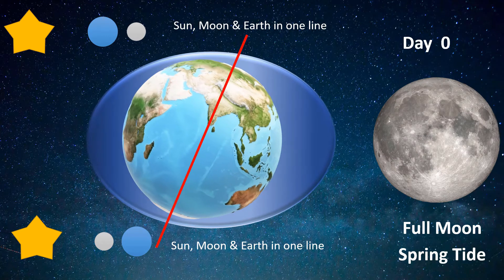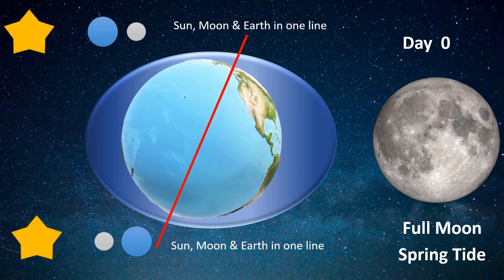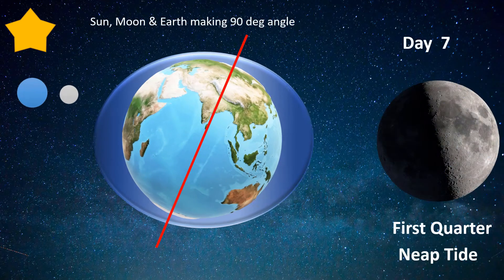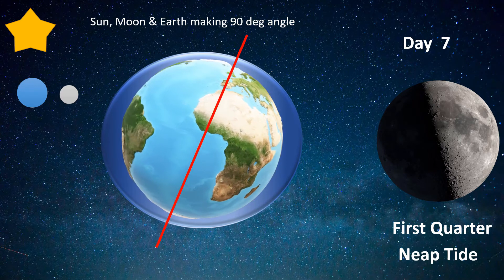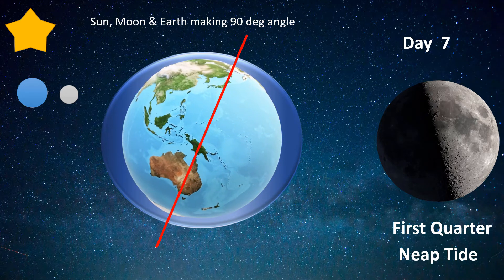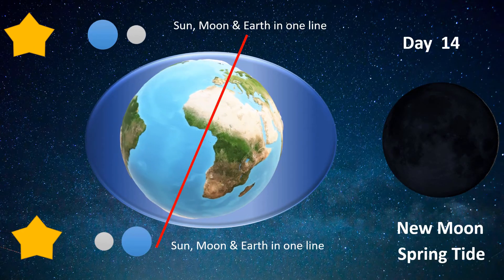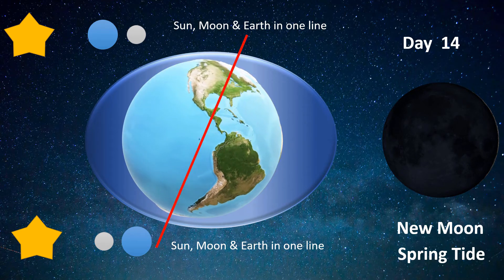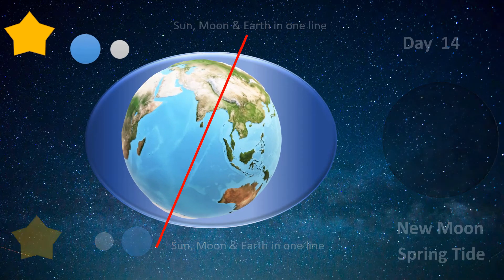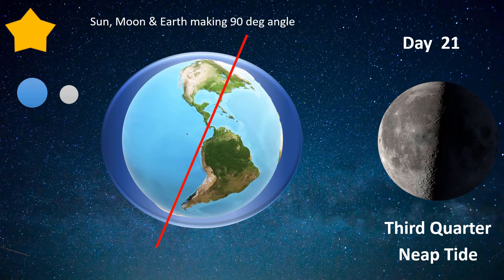Sometimes the bulges are higher than other times, and this happens every seven days or so. We've been talking only about the effect of the moon — let's now bring in the sun. When the sun, moon, and earth line up in one line, the combined gravitational pull is stronger on the earth's ocean surface, so we see very high bulges, and we call it spring tide. And when the sun, moon, and earth make a 90-degree angle, the gravitational pull of the sun nullifies some of the effect of the moon's pull, so we see somewhat diminished bulges, and we call it a neap tide.